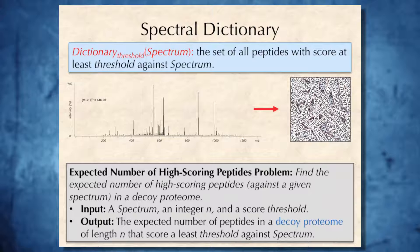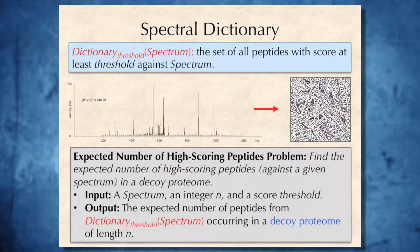we can reformulate the expected number of high-scoring peptides problem as the following problem. We want to find the expected number of peptides from dictionary occurring in decoy proteome of length n. And let's make one more step to reformulate this problem.